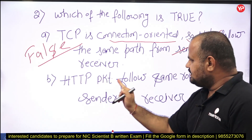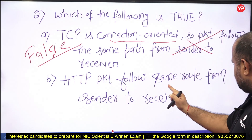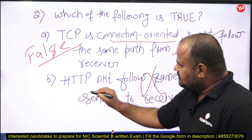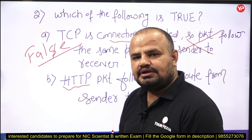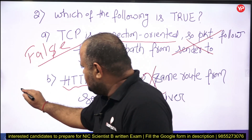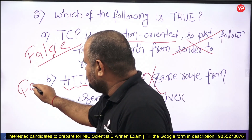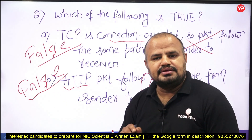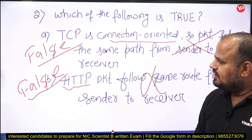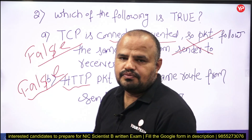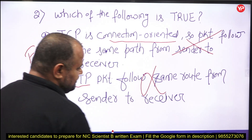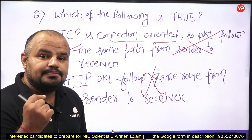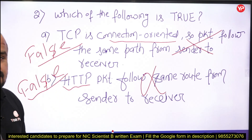Next: HTTP packets follow the same route from sender to receiver. This is also false, because HTTP uses TCP protocol, and being connection-oriented does not mean both parties follow the same path. Neither option A nor option B is true. This is a very important point — many students have the doubt that if a connection is made, then every packet always follows the same route. That is wrong.